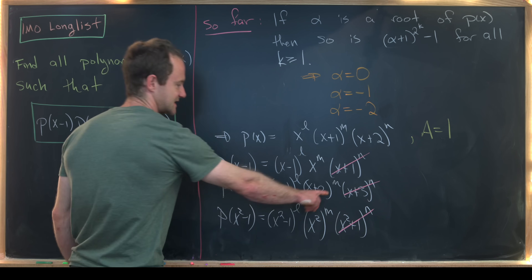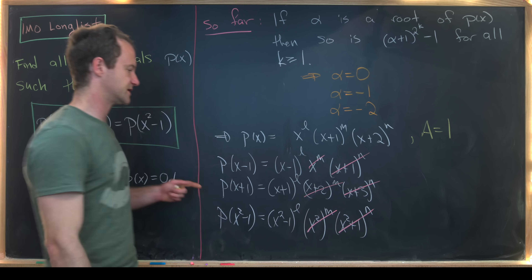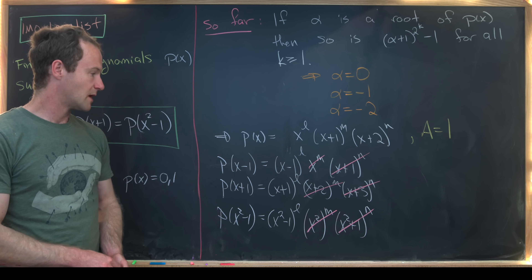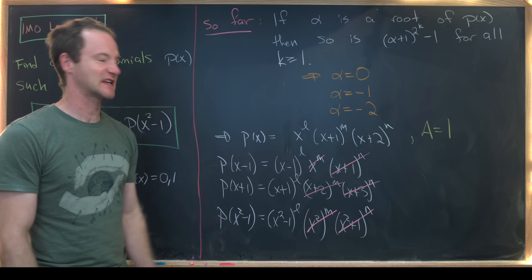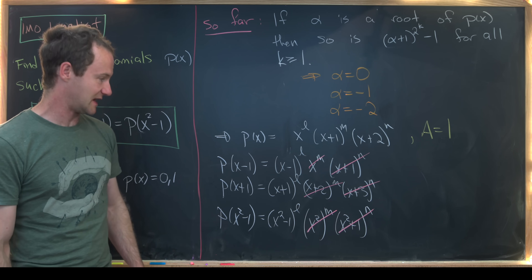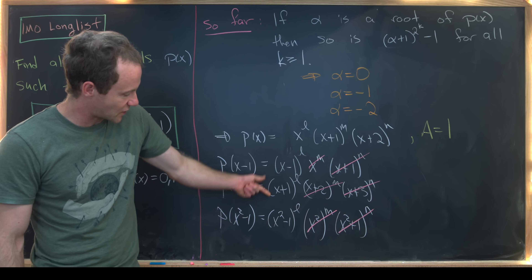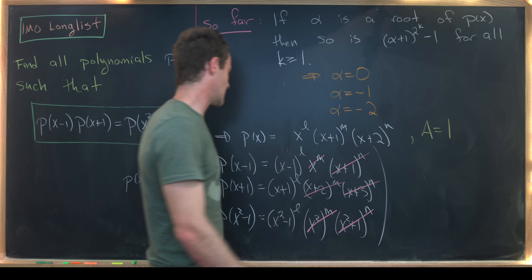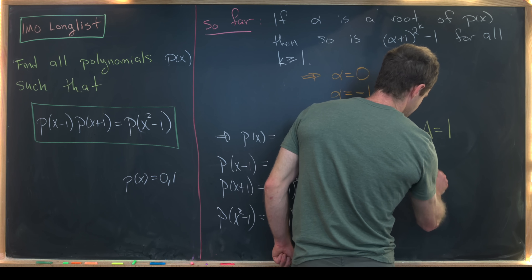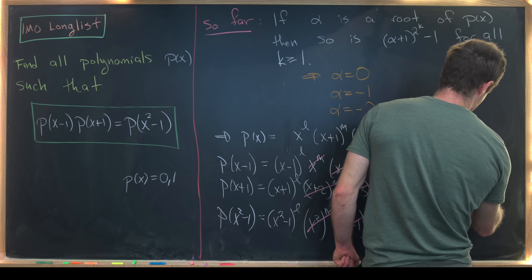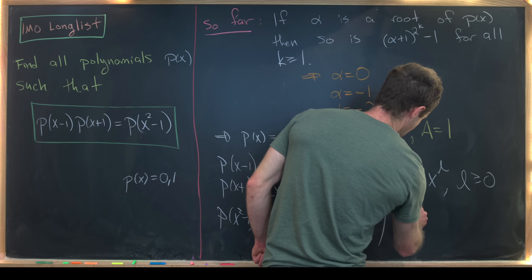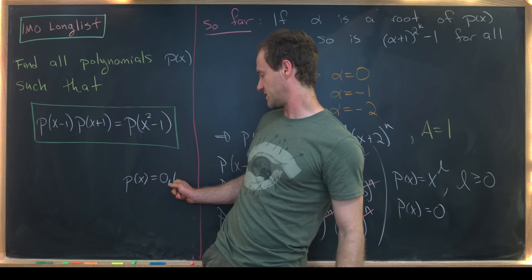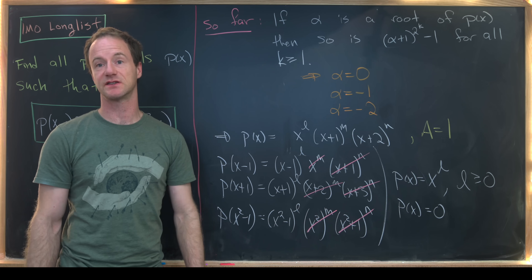With M = 0 and N = 0, we're left with just the exponent L. Taking the product of (x-1)^L and (x+1)^L gives (x²-1)^L, which matches exactly. So L is allowed to be any non-negative integer. In the end, p(x) = x^L for L ≥ 0, along with p(x) = 0. Note that L = 0 recovers the constant polynomial 1, which is already built into this family.